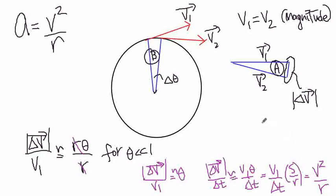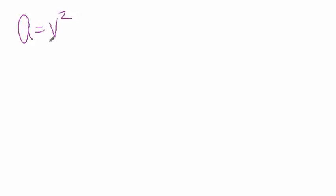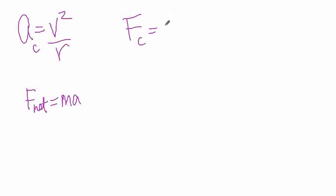Let's now do some example problems with this formula. By the way, I gave you the acceleration formula. We know from Newton's second law that the net force equals mass times acceleration. Therefore, for centripetal force — multiplying the centripetal acceleration by m — we get F_c = mv²/r.